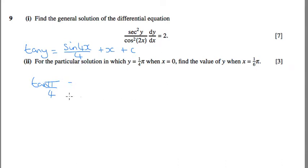sin of 0, which is 0, plus 0 plus c. So c is the tan of pi over 4, and the tan of pi over 4 is 1. So that's our c value.